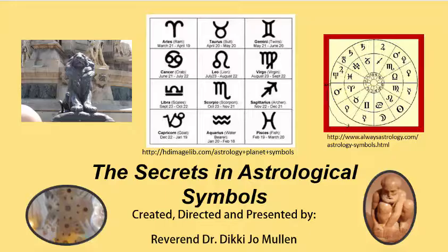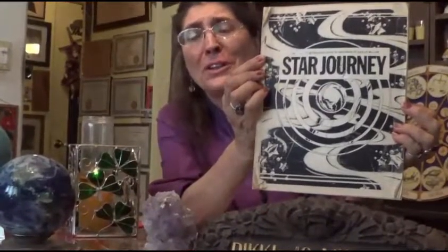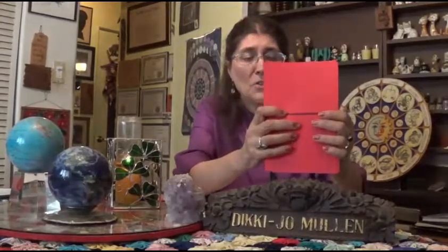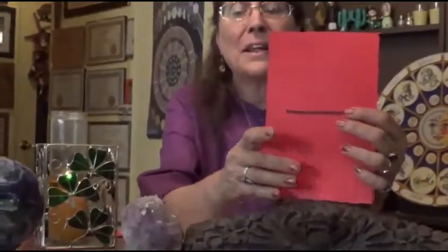Hello, this is astrologer Dickey Joe Mullen with a little class for you on what's going on when you look at all the squiggles and swirls in your birth chart. This is adopted from a book that I wrote some years ago called Star Journey, and we're still looking for a publisher for it. Let's take a glimpse into cosmic calligraphy — what is astrology's own symbolic language?